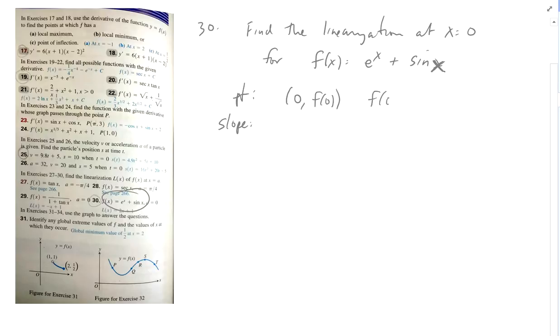Okay, and f(0) is e to the 0 plus sine of 0, which is 1 plus 0, which is 1. So my point is going to be (0, 1).